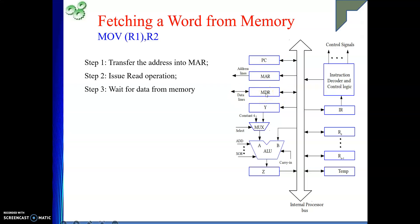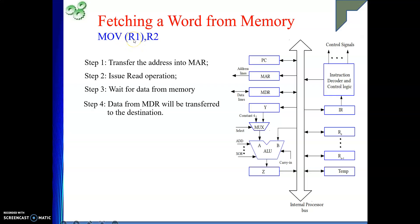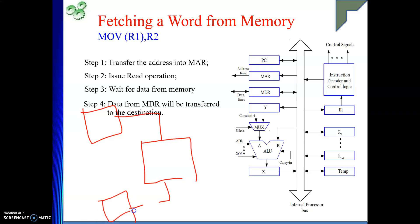From MDR, wherever we need to take the data, we can move it to that particular location. So the sequence is: transfer the address to MAR, issue the read signal, wait for MFC, then transfer data from MDR to the destination. With each register, there are two switches connected, controlled by two signals: an 'in' signal and an 'out' signal. If the out signal is on, data from the register is placed on the bus. If the in signal is on, data from the bus enters the register.